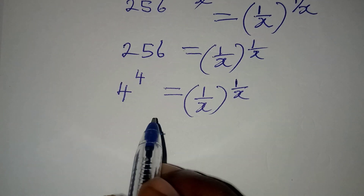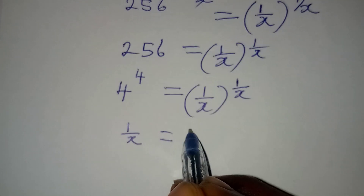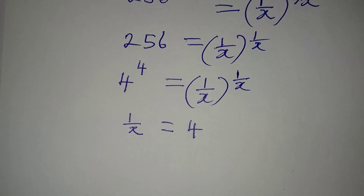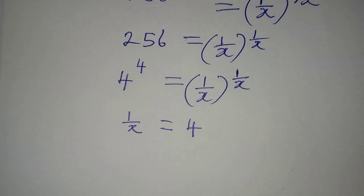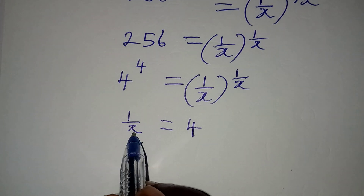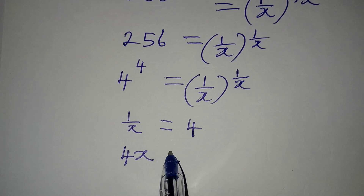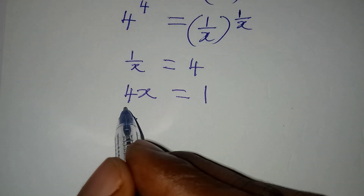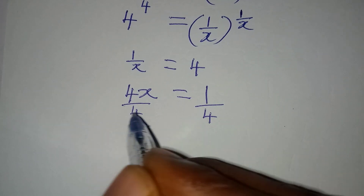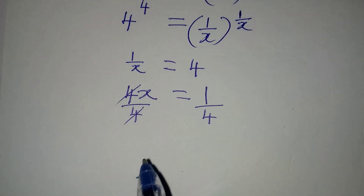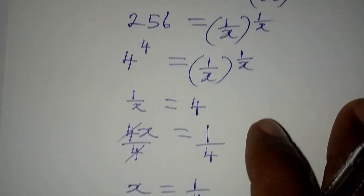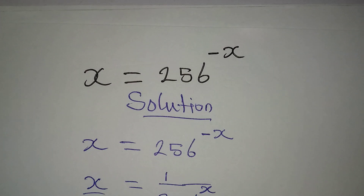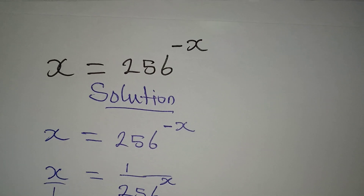Comparing the bases, we see that 1/x = 4. Comparing the powers, we also get 1/x = 4. From 1/x = 4, cross-multiplying gives 4x = 1, and dividing both sides by 4 gives x = 1/4. This is the value of x that satisfies the equation. You can substitute it back to verify.